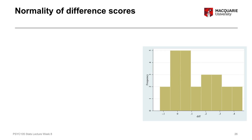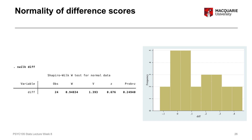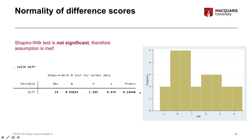We're looking for whether the distribution has some central tendency, is reasonably symmetrical, and is unimodal. As well as the histogram, we use the Shapiro-Wilk test as a significance test of normality. The results give a non-significant p-value of 0.249, which is greater than 0.05, meaning the result is non-significant. A non-significant Shapiro-Wilk test means our assumption is met because our distribution is not significantly different from a normal distribution.